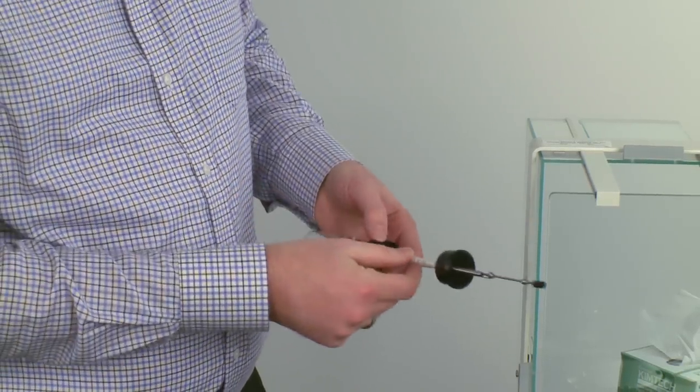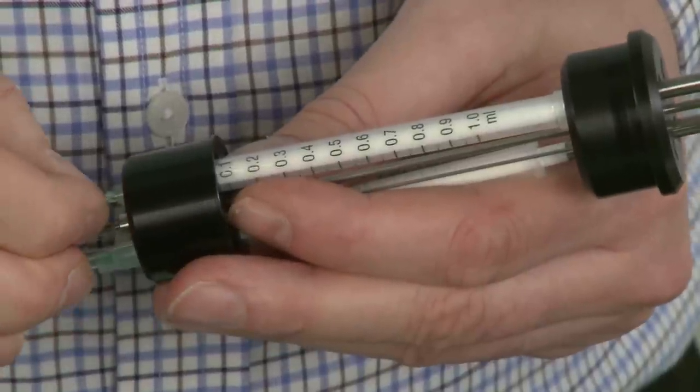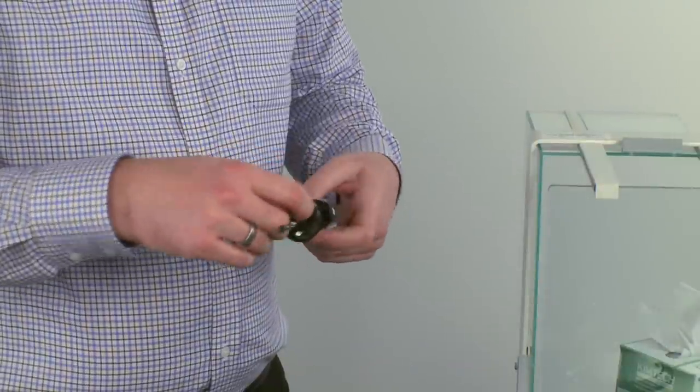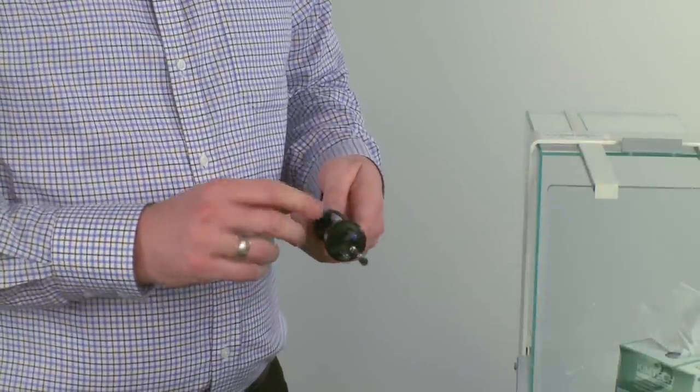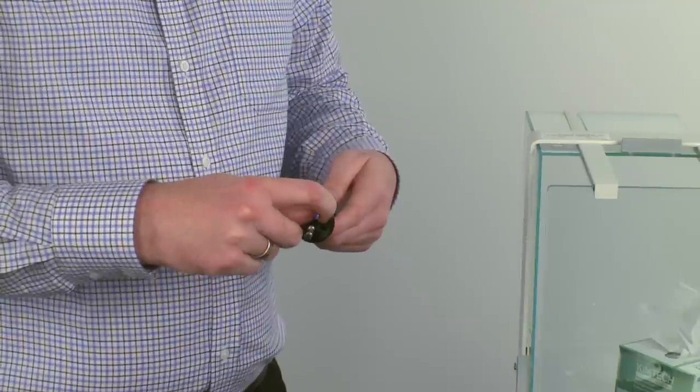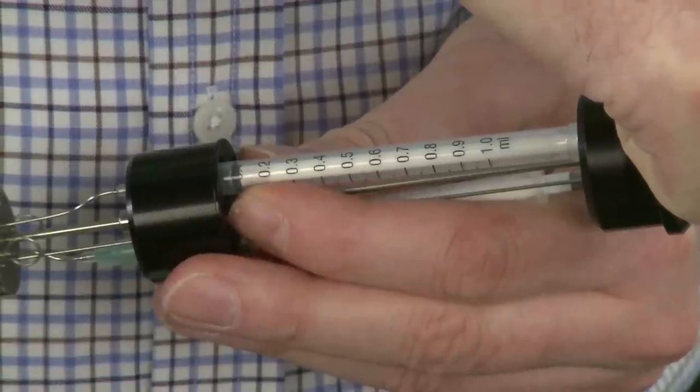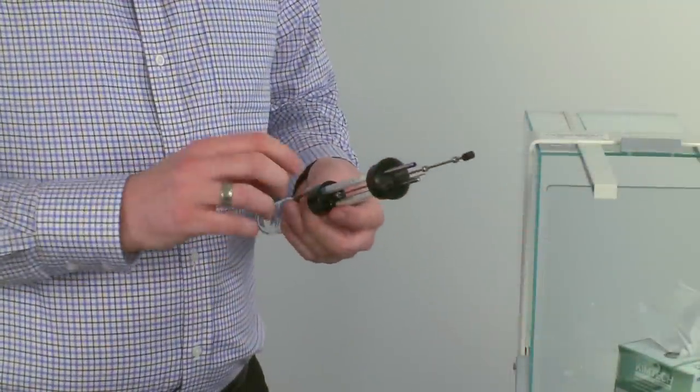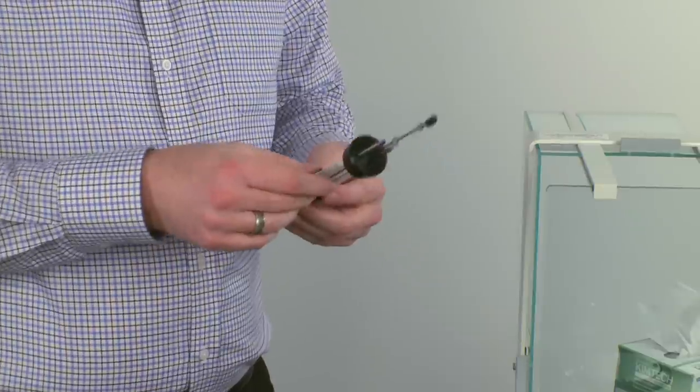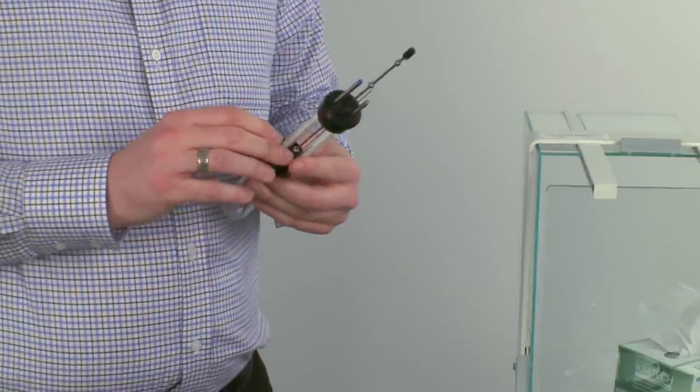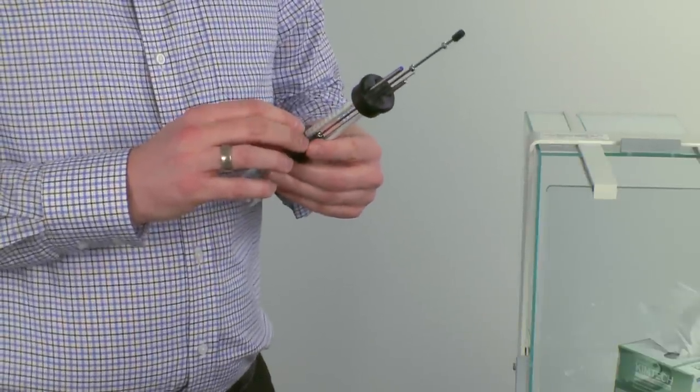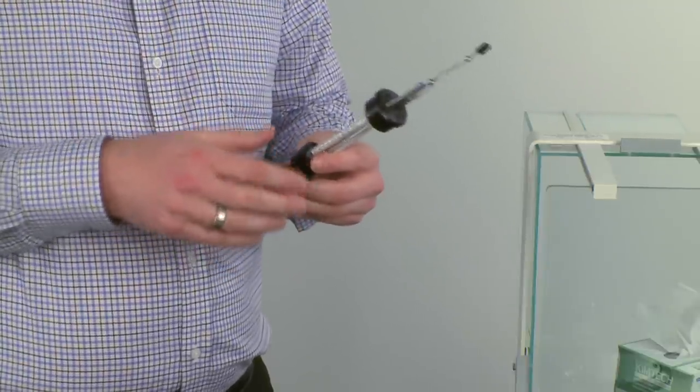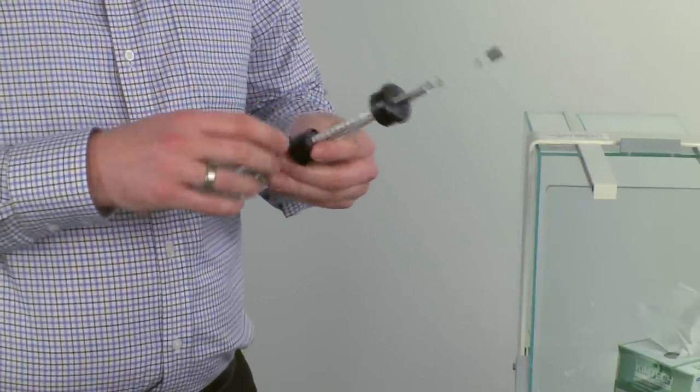Using the graduated scale of the syringe, move the plunger to the 100 microliter mark to create air space in front. This air space is important to ensure that everything you later load will be pushed inside the ampoule and nothing remains inside the cannula.